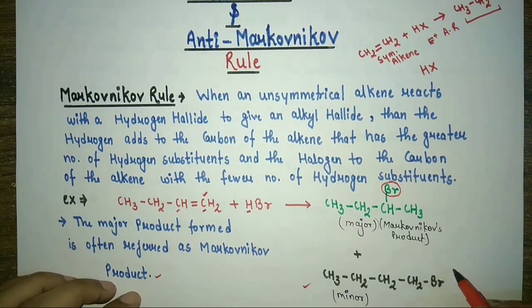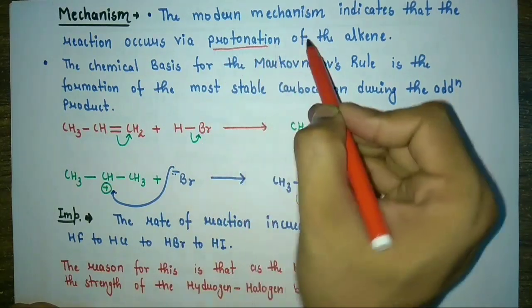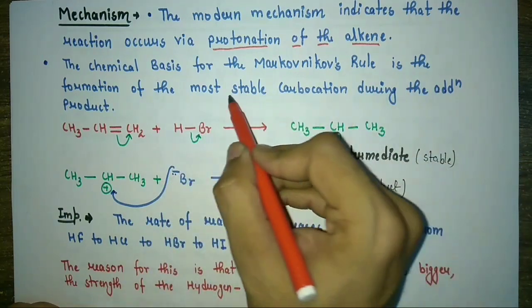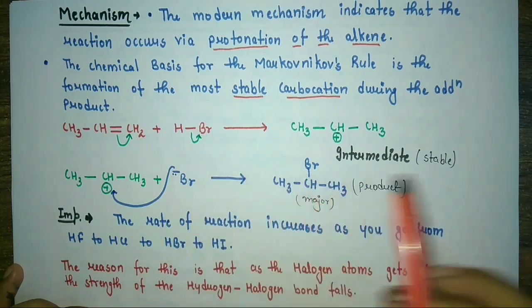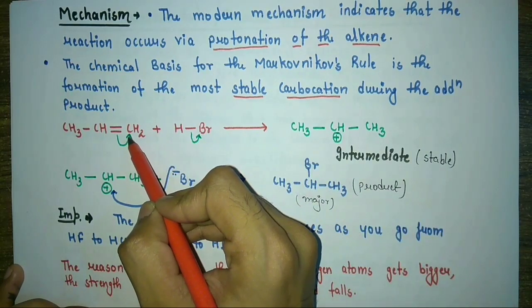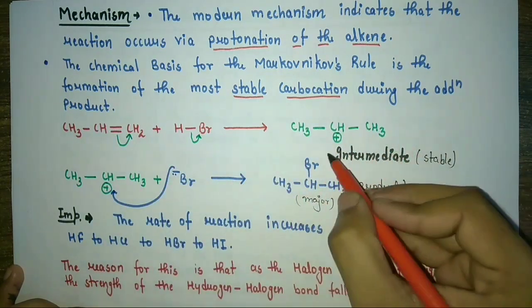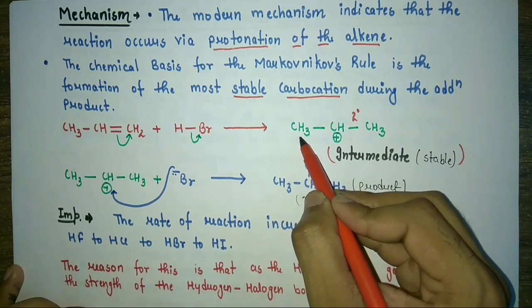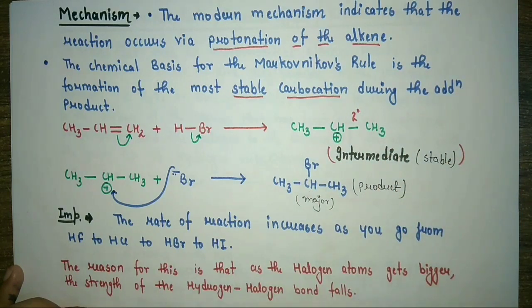Coming on to the mechanism of Markovnikov's rule: the reaction occurs via the protonation of an alkene. The chemical basis for Markovnikov's rule is the formation of the more stable carbocation during the addition. For example, with propene reacting with HBr, the hydrogen migrates to the carbon with more hydrogens, and a secondary carbocation intermediate is formed, which is stable due to a greater number of hyperconjugating steps and the inductive effect. Always remember the intermediate should be stable.